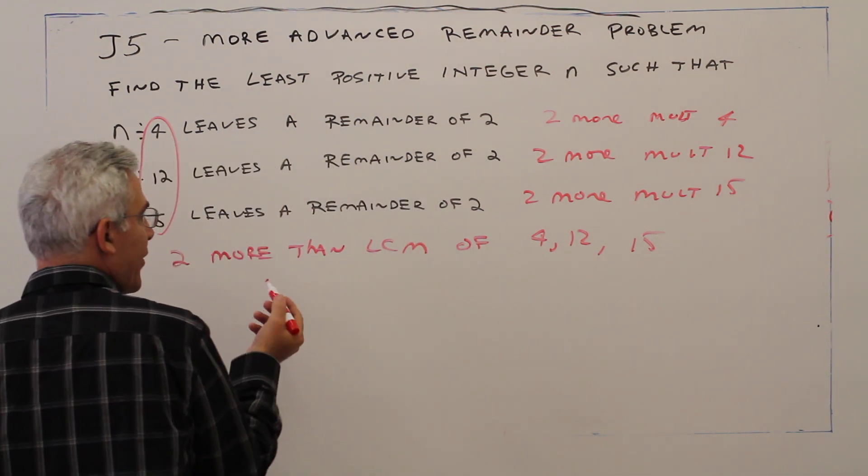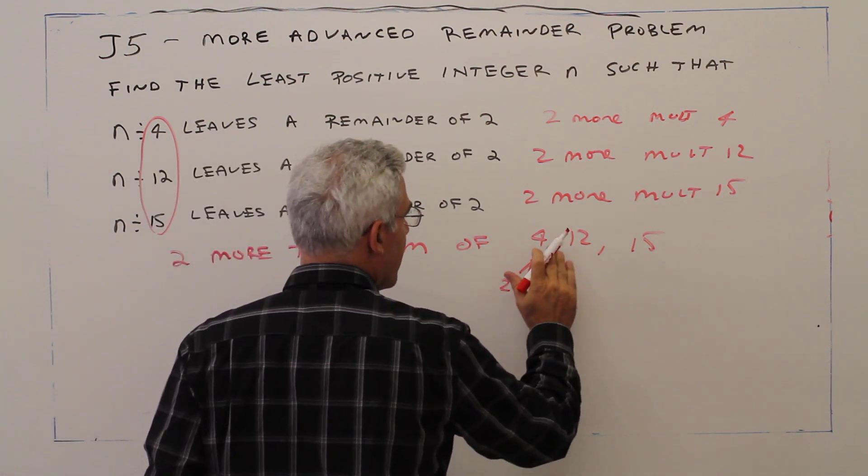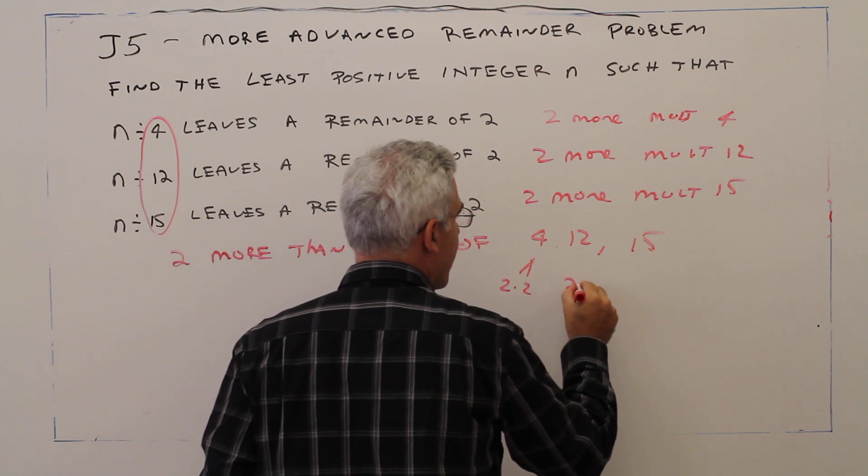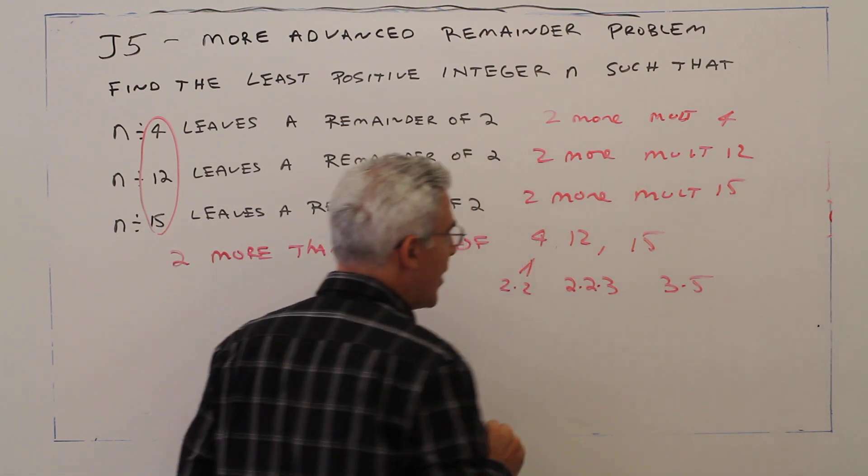I'll just do the prime factorization. This is 2 times 2, this is 2 times 2 times 3, and this is 3 times 5.